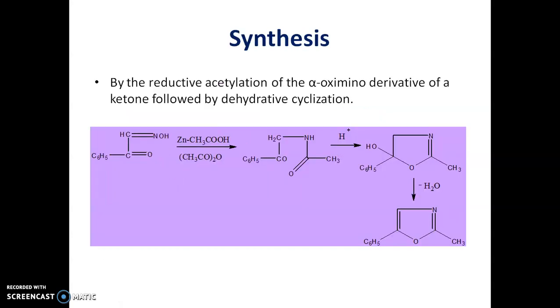The different methods of synthesis of Oxazole include the first method, by reductive acetylation of alpha-oxyimino derivative of ketone followed by dehydrative cyclization. We start with alpha-oxyimino derivative and it is subjected to reductive acetylation and we get substituted Oxazole as the end product.